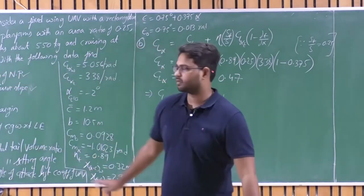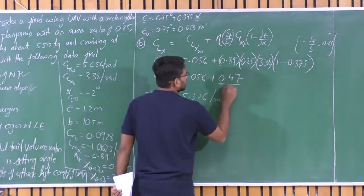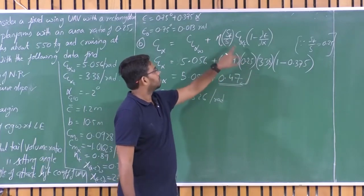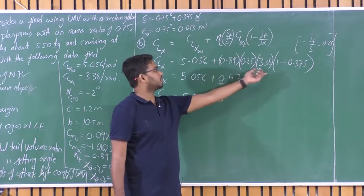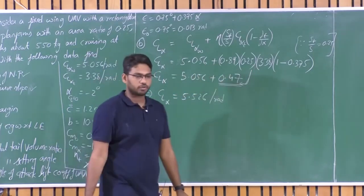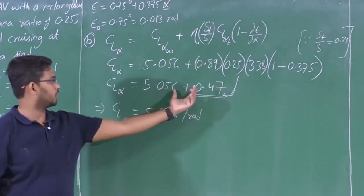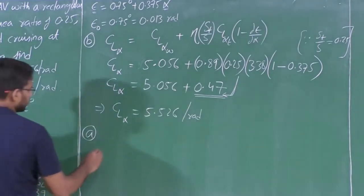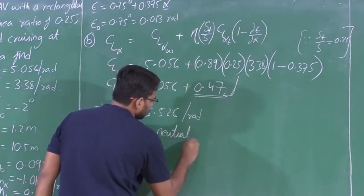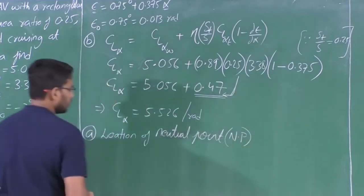That is a straightforward calculation. Notice how small the tail contribution to CL_alpha is — this is mainly because of the ST/S ratio of 0.25. Now let us address question A: the location of the neutral point. I do not have CG data here, so I cannot use the static margin approach directly.